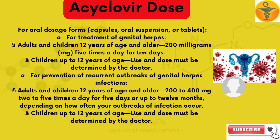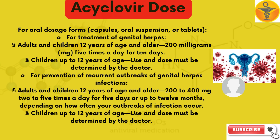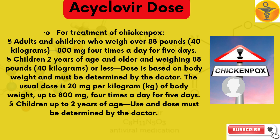For treatment of chicken pox: adults and children who weigh over 88 pounds (40 kg), 800 mg four times a day for 5 days. Children 2 years of age and older weighing 88 pounds (40 kg) or less: dose is based on body weight and must be determined by the doctor. The usual dose is 20 mg per kg of body weight, up to 800 mg four times a day for 5 days. Children up to 2 years of age: use and dose must be determined by the doctor.